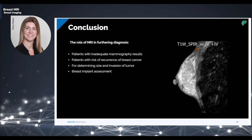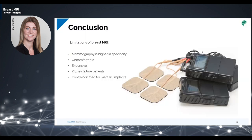MRI can close the diagnostic gap caused by the limitations of mammography and ultrasound for patients with inconclusive imaging results, a risk of reoccurrence of breast cancer, determining the size and invasion of a confirmed malignancy, and routine checkup of breast augmentations. Like any imaging modality, MRI has its limitations. The contrast enhancement of both malignant and benign lesions presents a diagnostic challenge, and the enhanced areas are correlated with those observed on mammography and ultrasound to determine their nature. The prone position required for MRI is uncomfortable for some patients. It is also expensive. Contrast medium is contraindicated for kidney failure patients. And finally, MRI is contraindicated for patients with metallic implants like pacemakers.